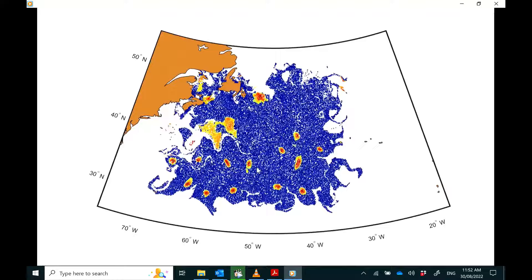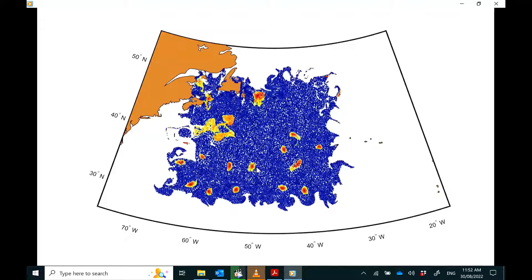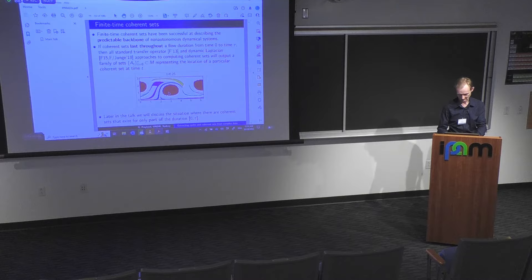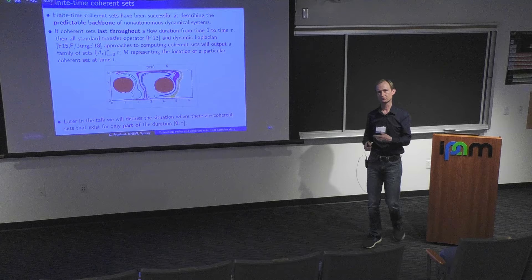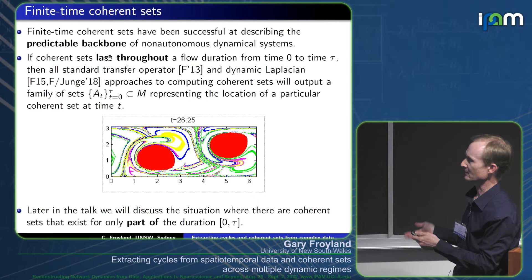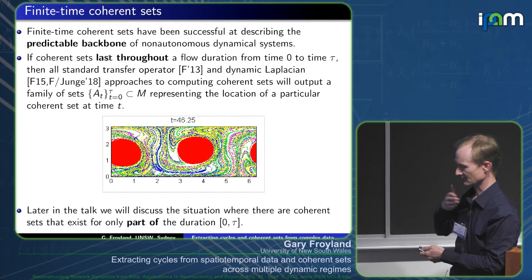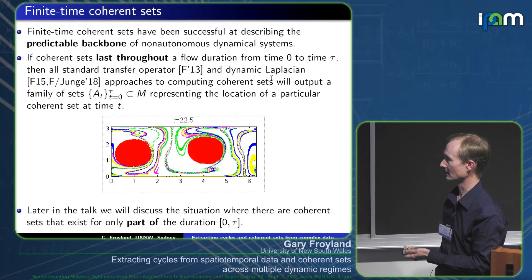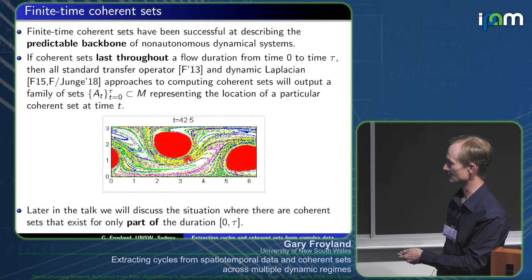These eddies are good transporters of heat, salt, carbon, and so forth. This is a 90-day movie, so these objects last 90 days. Toward the end of the talk I'll discuss objects that are coherent for only some of the time. You can think of these coherent structures as the more predictable components of your dynamical system — a predictable backbone or skeleton of otherwise turbulent dynamics — and use them for model reduction, modeling them well and treating the rest as noise.